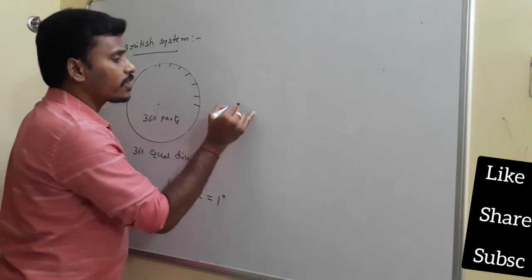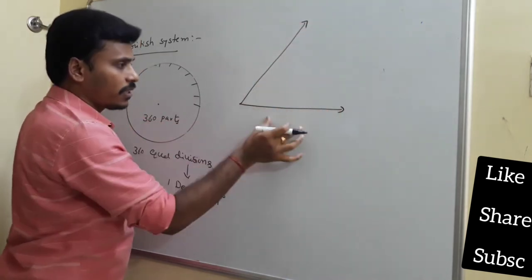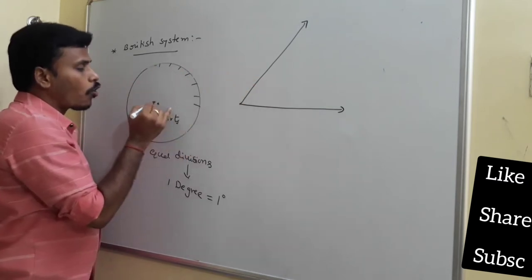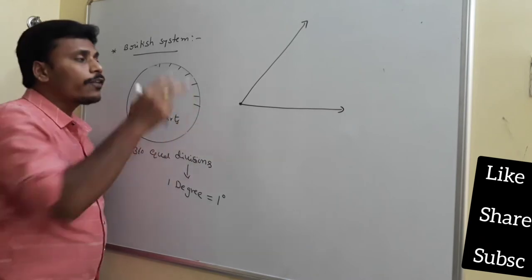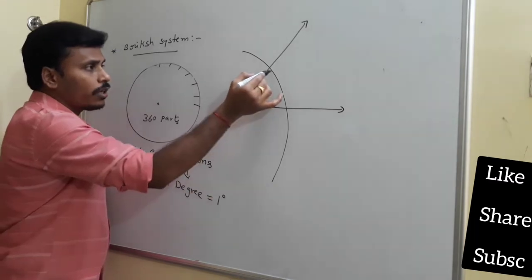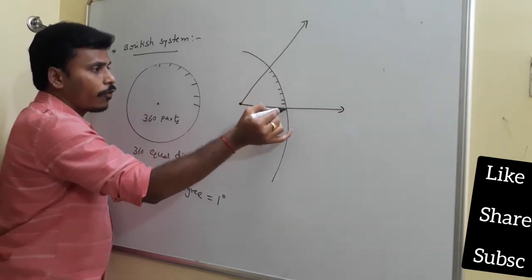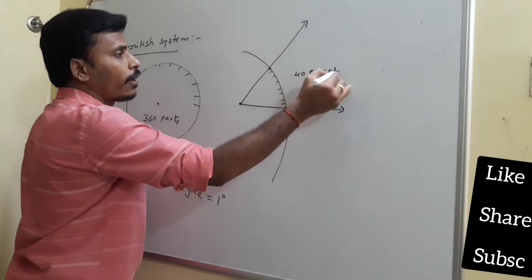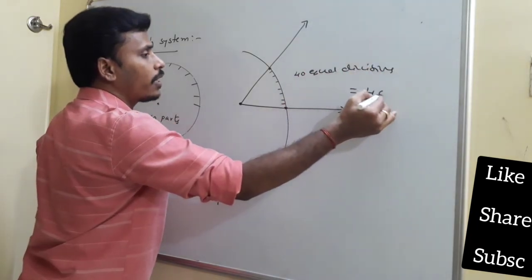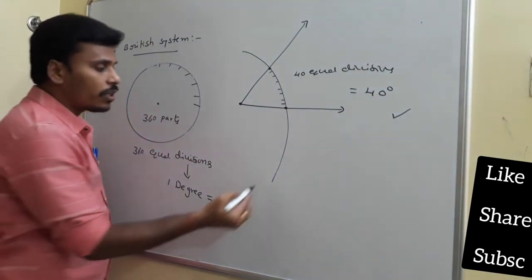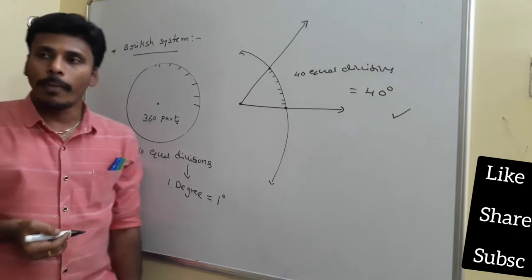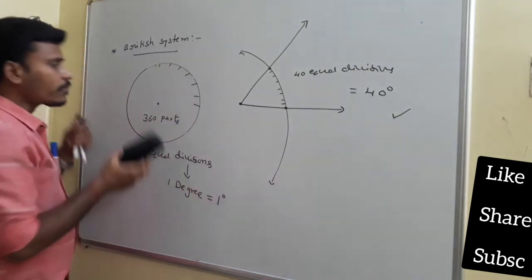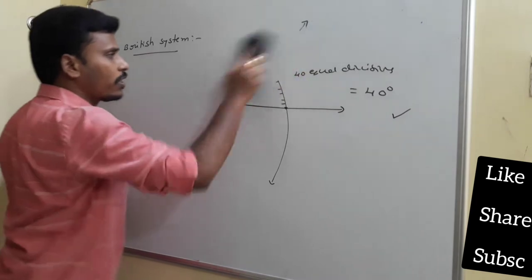If you wish to measure an angle, you take this circular disk and place it such that the center coincides with the initial point of the angle. Then there will be some equal divisions in the region between the initial ray and the final ray. If there are 40 equal divisions, we say the angle is 40 degrees. This is essentially our day-to-day protractor used to measure angles.